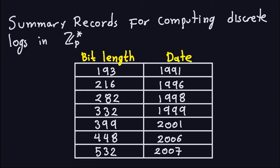Hello and welcome again. In the previous video I mentioned a little bit of the security of the Diffie-Hellman key exchange and how it is related to computing discrete logs in Z_p*. I gave you a chart of those records that had been computed, with the bit length of the prime corresponding to the date where they were computed. I want to say a couple more things about the security of this key exchange.